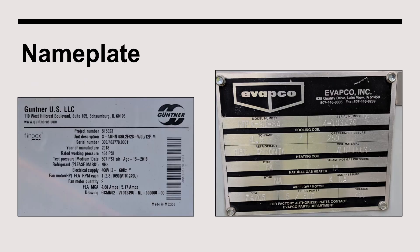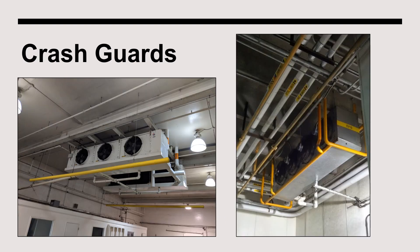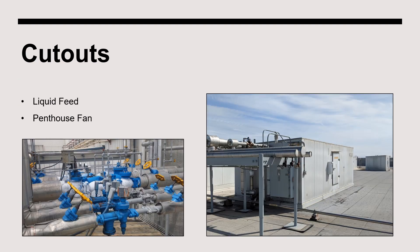Each air cooling evaporator should be equipped with a manufacturer-supplied nameplate. Where physical impact is a concern, crash guards can be employed to prevent or reduce the likelihood of physical impact. Many systems are configured so that if ammonia is detected, the liquid feed solenoid valve to the affected evaporator will automatically close. For penthouse evaporators, the doors are often equipped with a limit switch to shut off the fans if the door is open, to protect personnel from the rotating fan blades.